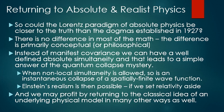So could the Lorentz paradigm of an absolute physics be closer to the truth than the dogmas established in 1927? There is no difference in most of the math. The difference is primarily conceptual, or philosophical. Instead of a manifest covariance, we can have a well-defined absolute simultaneity, and that leads to a simple answer to the quantum mechanics collapse mystery. When non-local simultaneity is allowed, so is an instantaneous collapse of a spatially finite wave function. Einstein's realism is then possible, if we set relativity aside. And we may profit by returning to the classical idea of an underlying physical model in other ways as well.